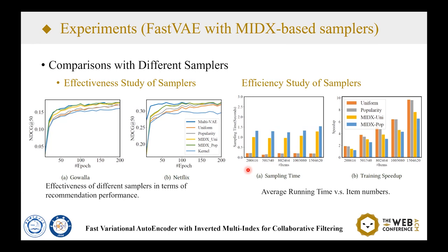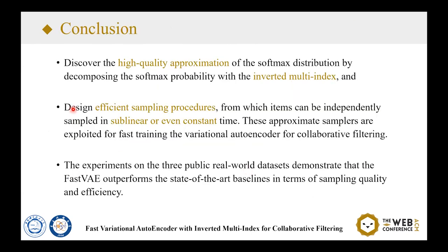In conclusion, in this paper we discovered a high-quality approximation of the softmax distribution by decomposing the softmax probability with the inverted multi-index. We designed efficient sampling procedures with two variants — MIDX-uni and MIDX-pop — from which items can be independently sampled in sublinear or even constant time. These approximate samplers are used for faster training of the variational autoencoder, and we conduct experiments on three public real-world datasets to demonstrate both efficiency and effectiveness.